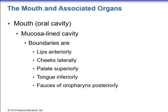The first stop of our digestive system is the mouth, also known as the oral cavity. It is a mucosal-lined cavity with different boundaries: the lips anteriorly, the cheeks laterally, the hard and soft palate superiorly forming the roof of the mouth, the tongue inferiorly, and the fossae of the oropharynx posteriorly — where the palatine tonsils are located.